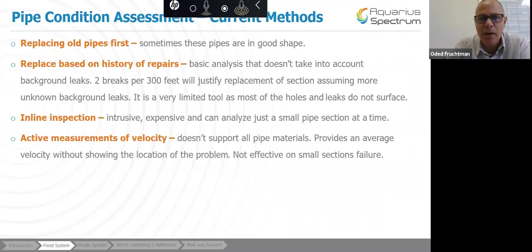The current methods, I've just highlighted a few of them. The main ones, there are others. So those water utilities that don't have a pipe condition assessment project would probably replace their old pipes first, which are sometimes in good shape. Or based on history of repairs. I know that in some water utilities, if they have two breaks per 300 feet, it will justify replacement of the section, assuming there's more unknown background leaks. This is a very limited tool, as most of the holes and leaks do not surface. They're what we call background leaks. A-line inspection, very intrusive, very expensive, can analyze only a small pipe section at the time, and there's active measurement of velocity that doesn't support all pipe materials, provides an average velocity without showing the location of the problem, not effective when the problem is in small sections that failed.